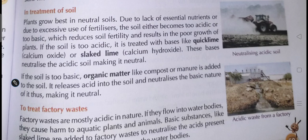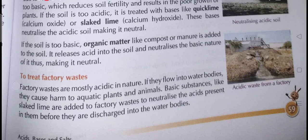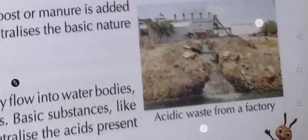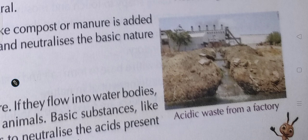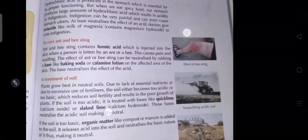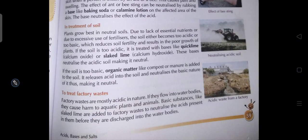In soil treatment you can use acids and bases, like slaked lime, to neutralize the soil. To treat factory waste: factory waste is mostly acidic in nature, so if it flows into water bodies it causes harm to aquatic plants and animals. Base substances like slaked lime are added to factory waste to neutralize the acid present in it before it is discharged into the water body. In this picture you can see acidic waste from a factory being released into a water body.